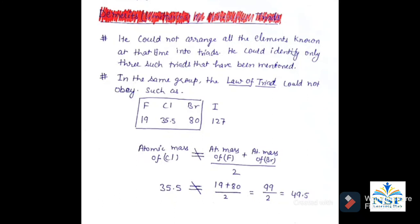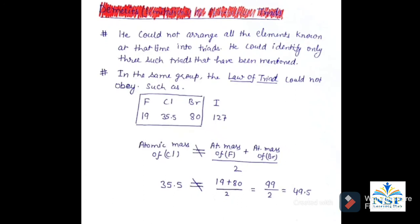The demerits or limitations of Dobereiner's Triads are: he could not arrange all the elements known at that time into triads; he could identify only three such triads. Also, in the same group the Law of Triads could not always be obeyed — for example, if we take fluorine in place of iodine, then in the triad formed, the atomic mass of chlorine is not equal to the average of the atomic masses of fluorine and bromine, so this law fails.